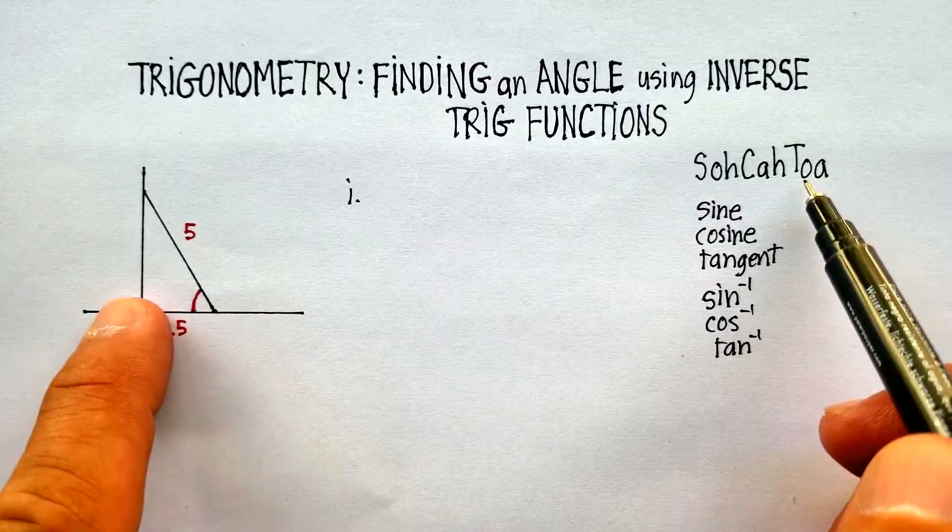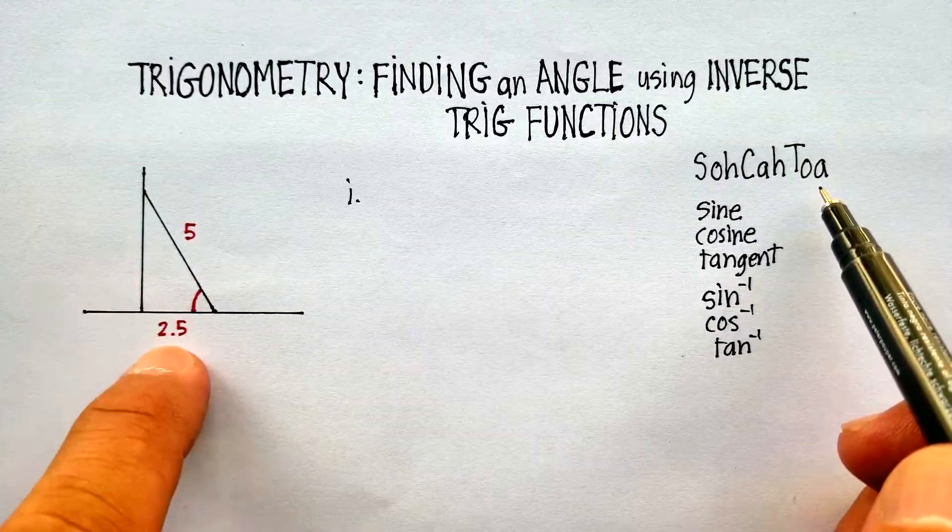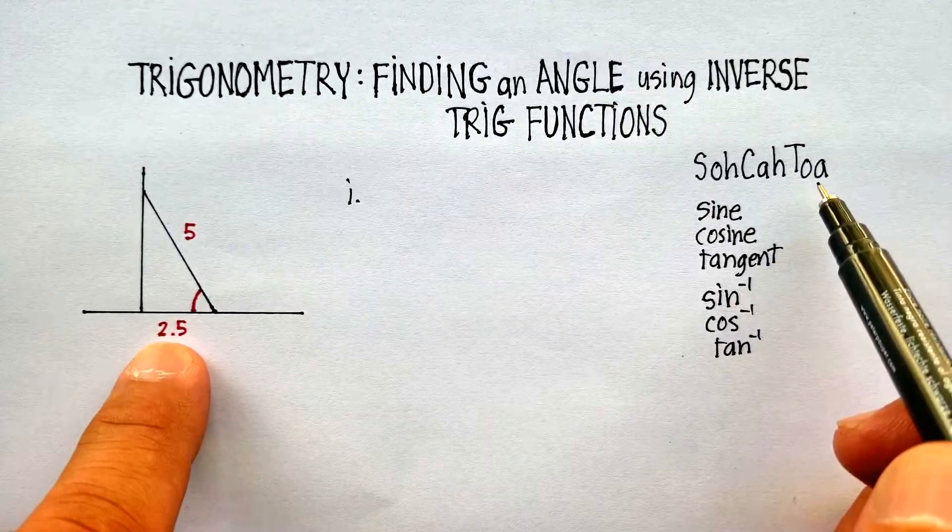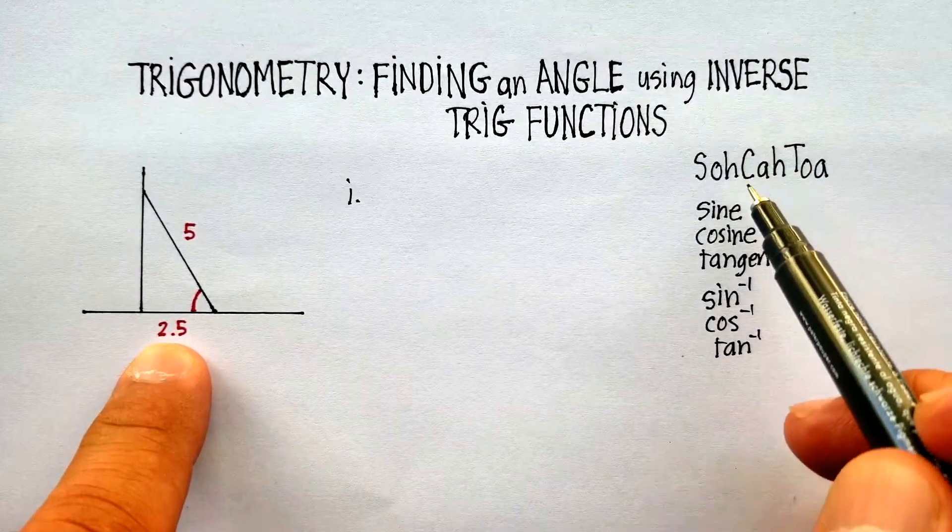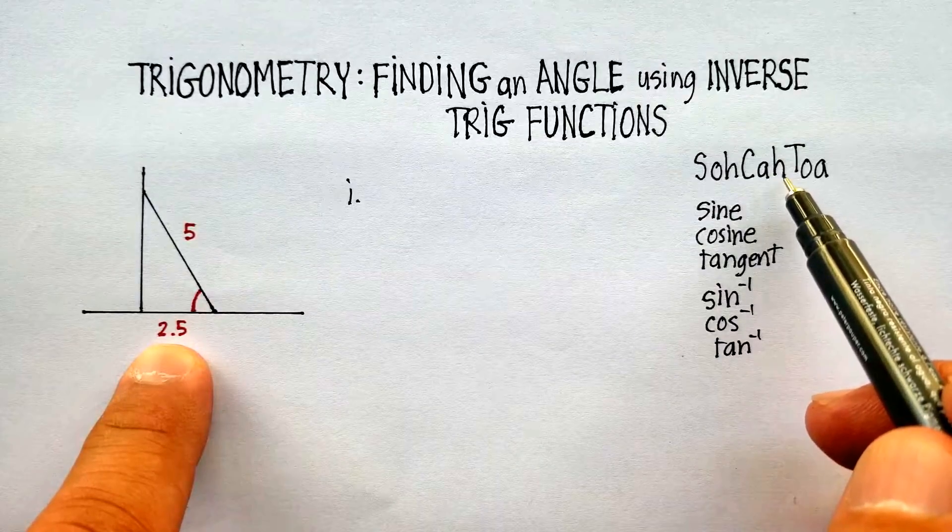Tangent would have the opposite over the adjacent. And again, we don't have the opposite, but we do have the adjacent. Now, the only one that actually works is the cosine, which is the adjacent side over the hypotenuse.